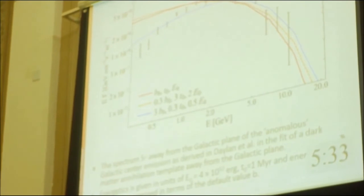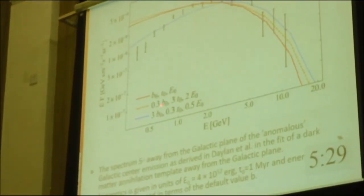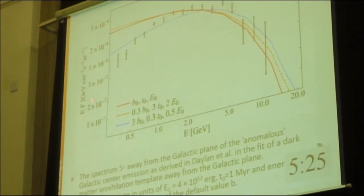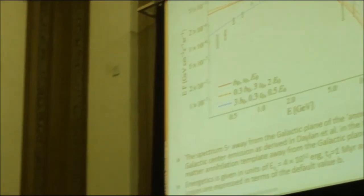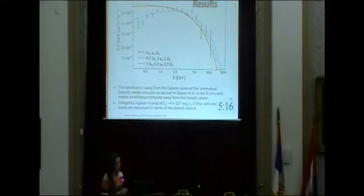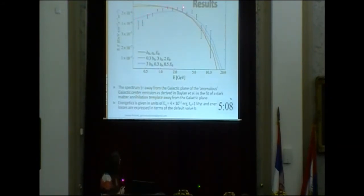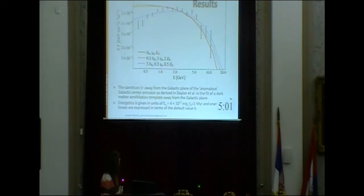Here you can see one of our results presented in a typical way. This is the Dalen et al. paper. On the y-axis you can see the energy times flux, and on the x-axis the energy, where the dots with error bars present the Dalen et al. best fit of the dark matter annihilation template. In blue, red and orange you can see what we get for our analytical model for different times when energy injection might have happened, for different energies, and B expresses the energy losses of the electrons. Our results fit quite well to the same best dark matter template offered by Dalen and his collaborators.